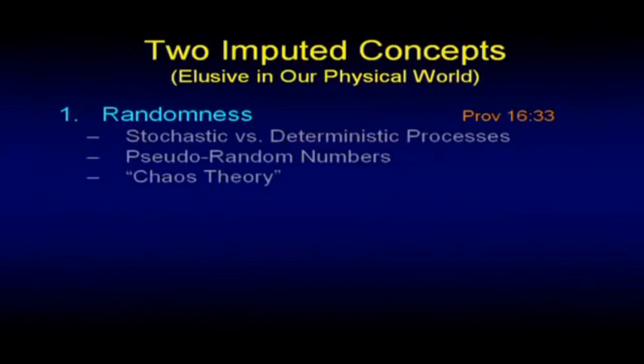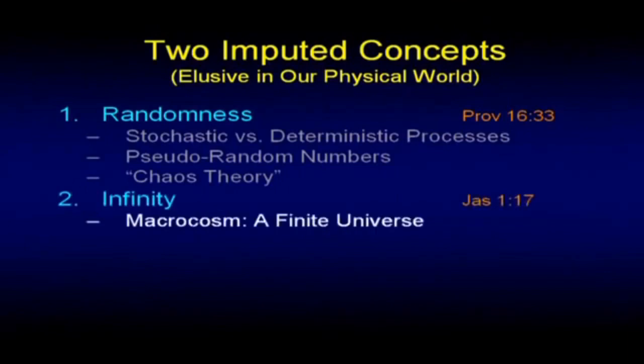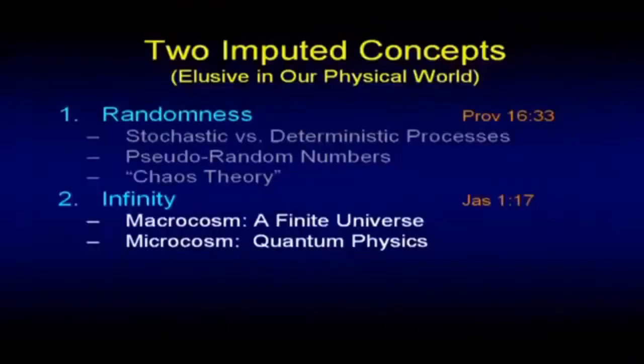There are two concepts we can talk about in mathematics but we discover don't show up in the universe: randomness and infinity. The infinity in the macrocosm would say we have an infinite universe, except we know we have a finite universe — there is no infinity in astronomy. The shock is that we can't find it on the small side either. There's a limit to smallness. Anything you talk about — length, mass, energy, or time — there's a limit to how small, because it's granular. It's made up of indivisible units. That's what we call quanta.